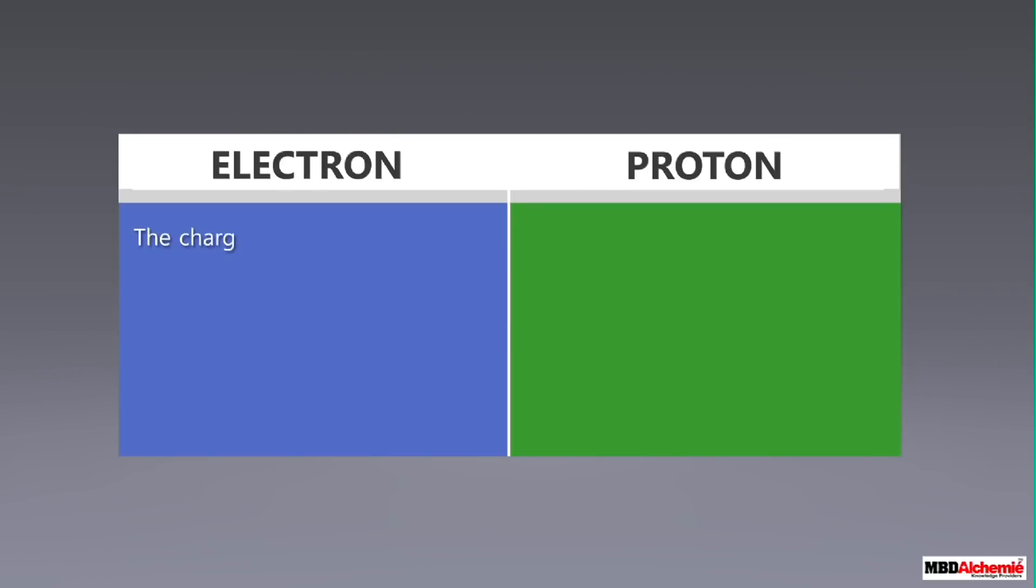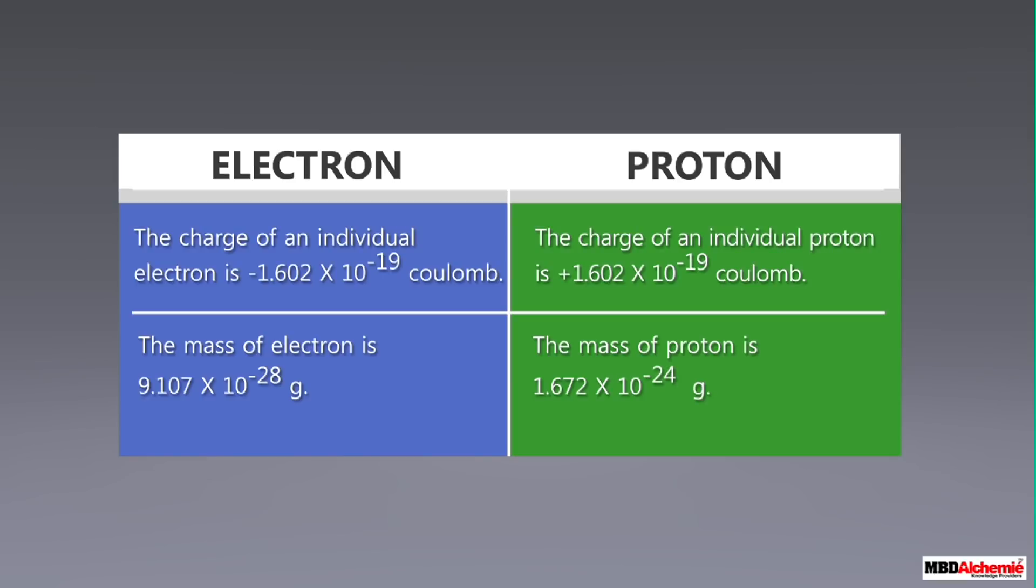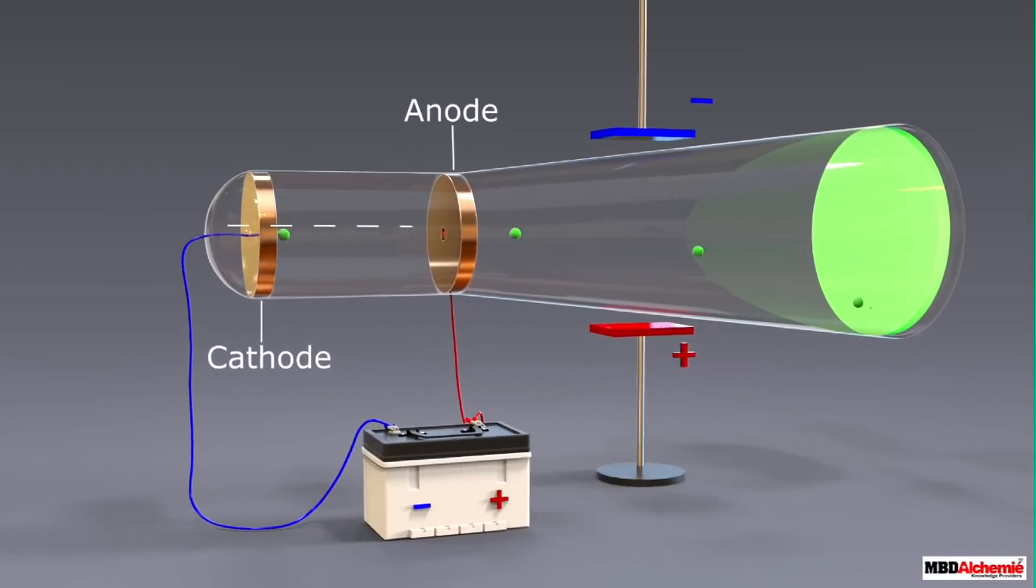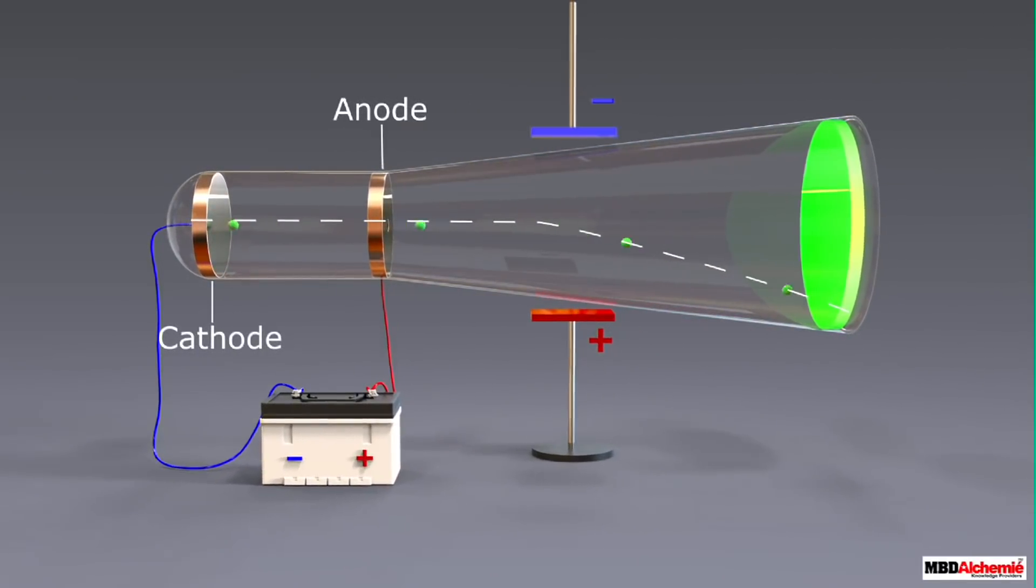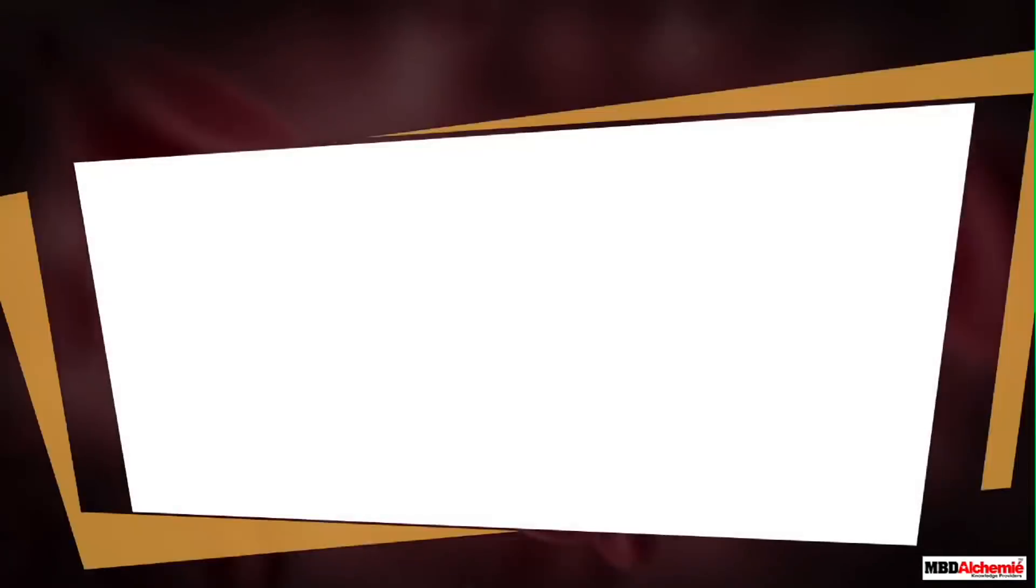Let us now compare some of the features of these particles. The charge of an individual electron is -1.602 × 10^-19 coulomb, whereas it is +1.602 × 10^-19 coulomb for protons. And if we compare masses, it is 9.107 × 10^-28 gram for an electron and 1.672 × 10^-24 gram for a proton. Moreover, an electron deflects towards the positive field and away from the negative field, and a proton deflects towards the negative field and away from the positive field.